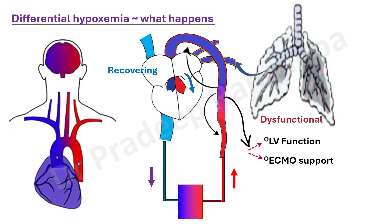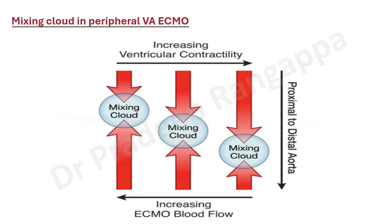Differential hypoxemia typically happens where heart function is recovering but the lung is completely dysfunctional and not pushing oxygenated blood through the pulmonary veins into the LV. That is when deoxygenated blood mixes with the super-oxygenated ECMO blood, forming the mixing cloud — an interface between deoxygenated and oxygenated blood. If you understand this conceptually, I would suggest all DRNB trainees to put it pictorially in exams to make it very clear you've understood the concept well.